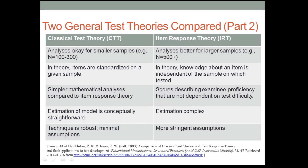A bit more before we leave this comparison. Another advantage of classical true score theory is that it's okay for smaller samples — ends of 100 to 300 participants. The items are standardized on a given sample. The mathematical analyses are simpler, estimation of parameters like reliability is relatively straightforward, and the technique is robust — you don't have to make a lot of assumptions for it to work. Item response theory, on the other hand, requires larger samples; I usually like to have 400 or 500 at minimum, though I've seen researchers use one or two hundred, which is usually not enough.